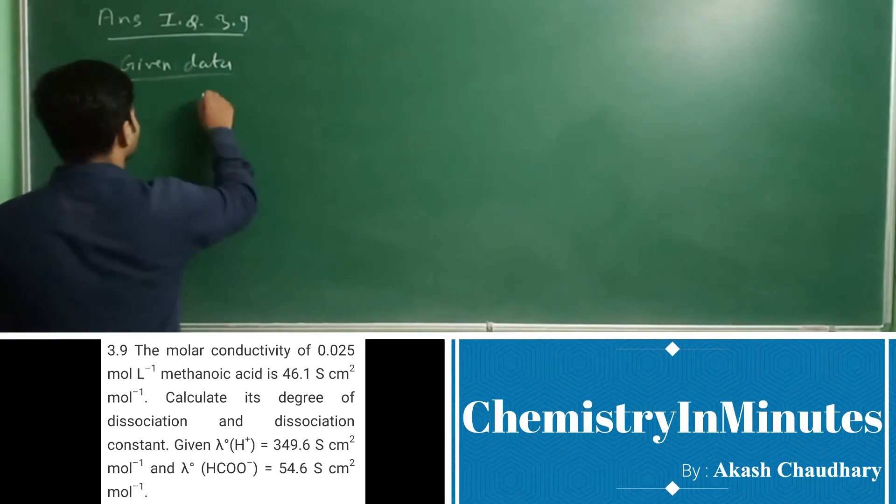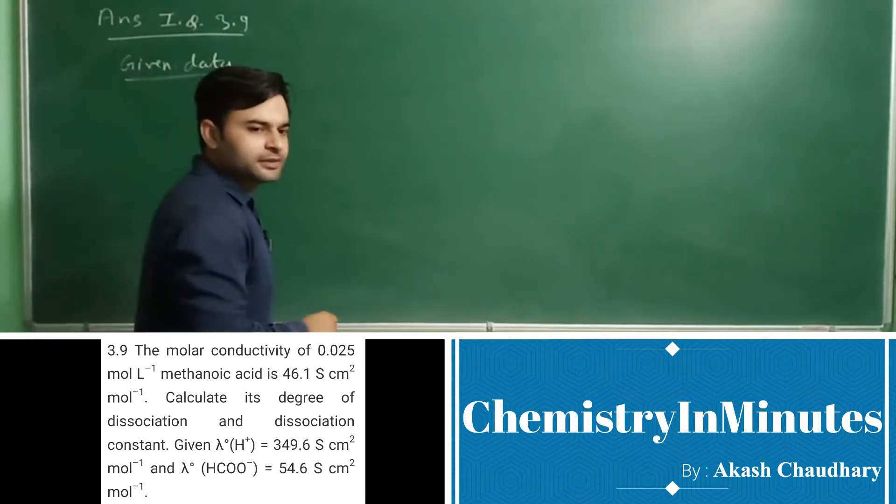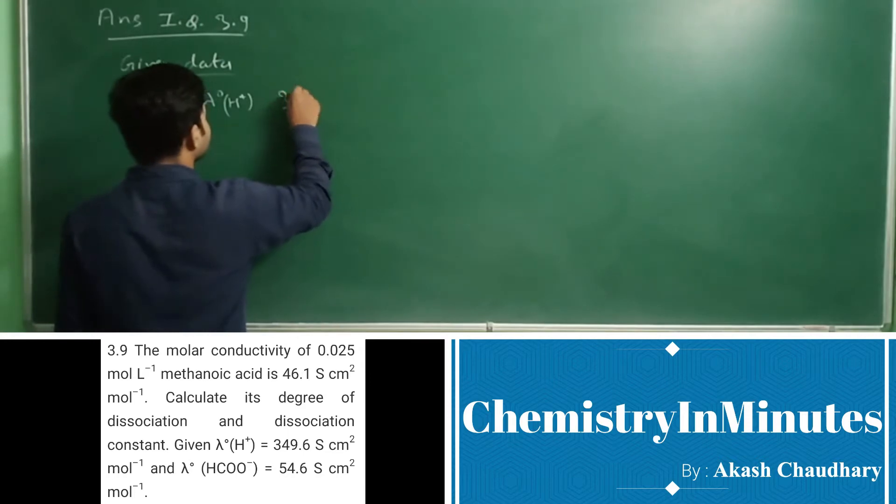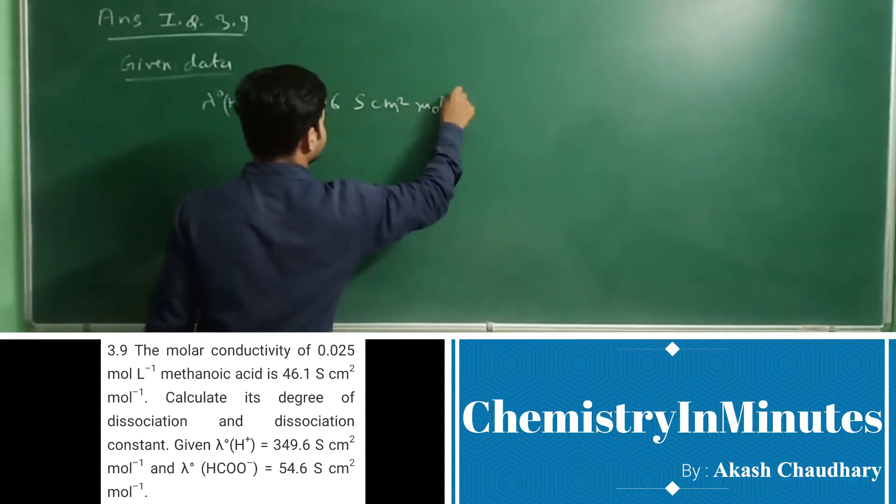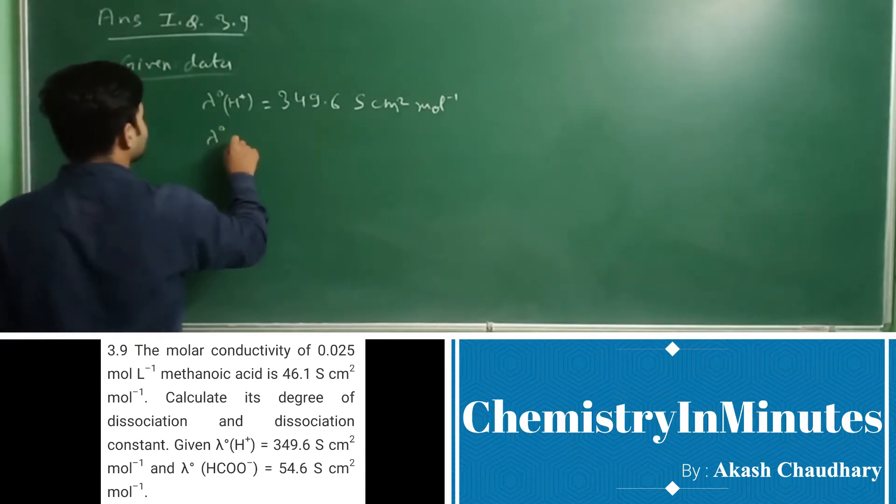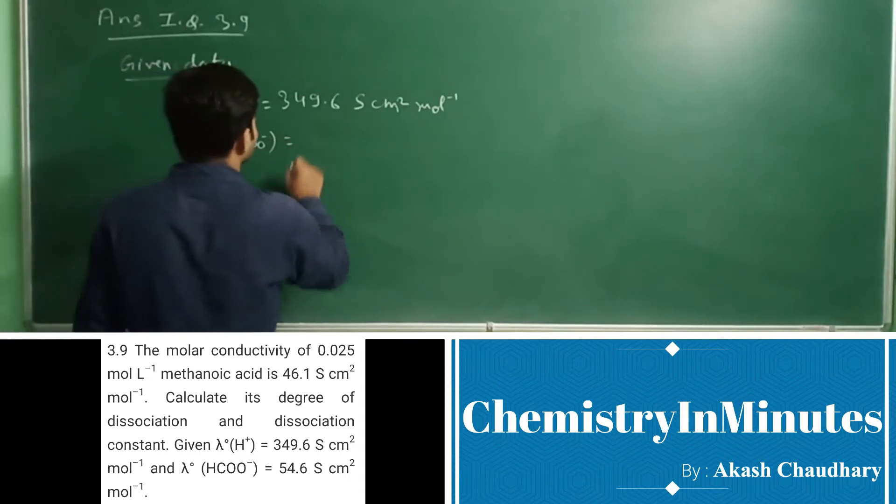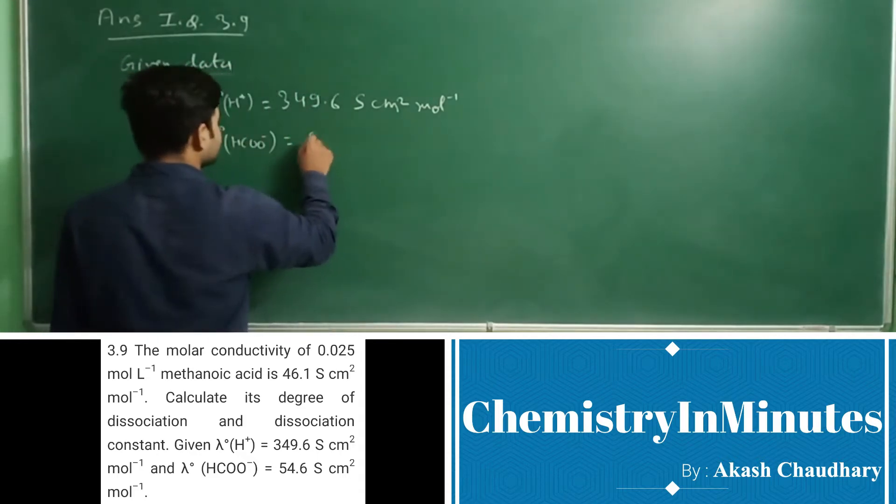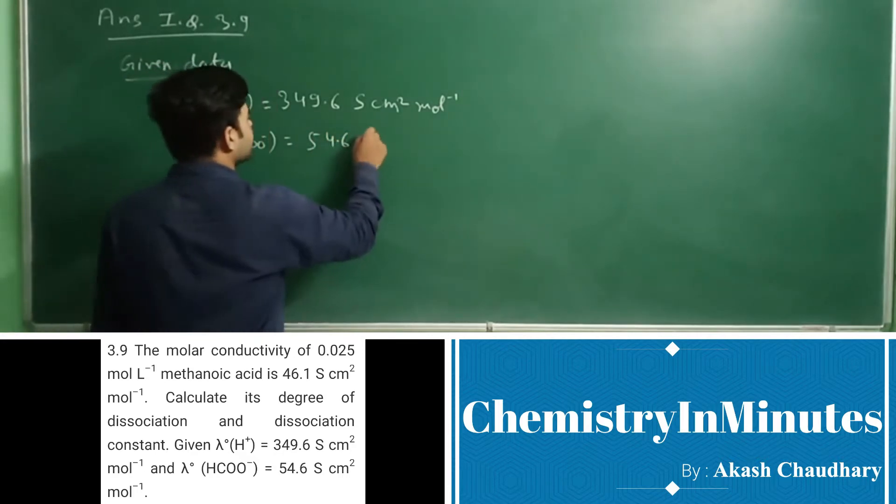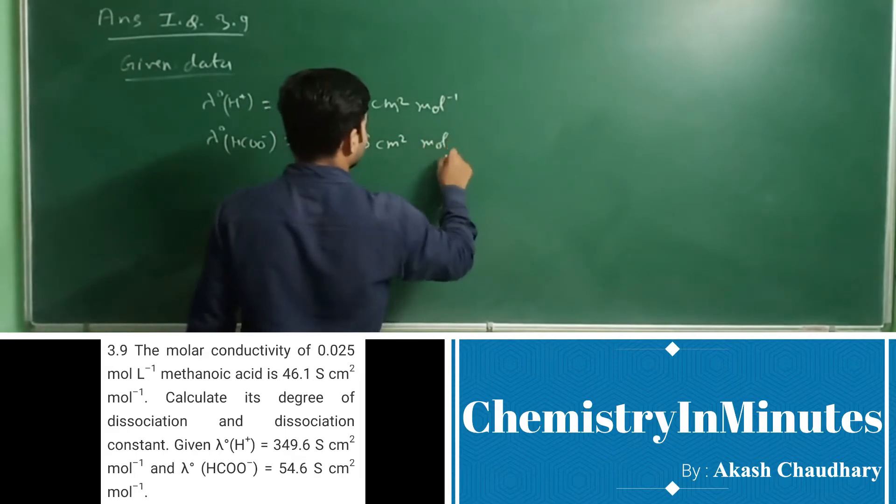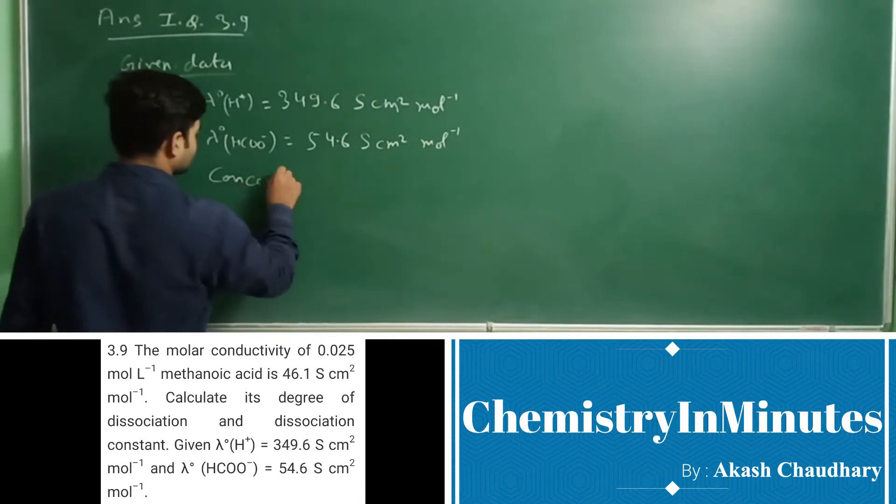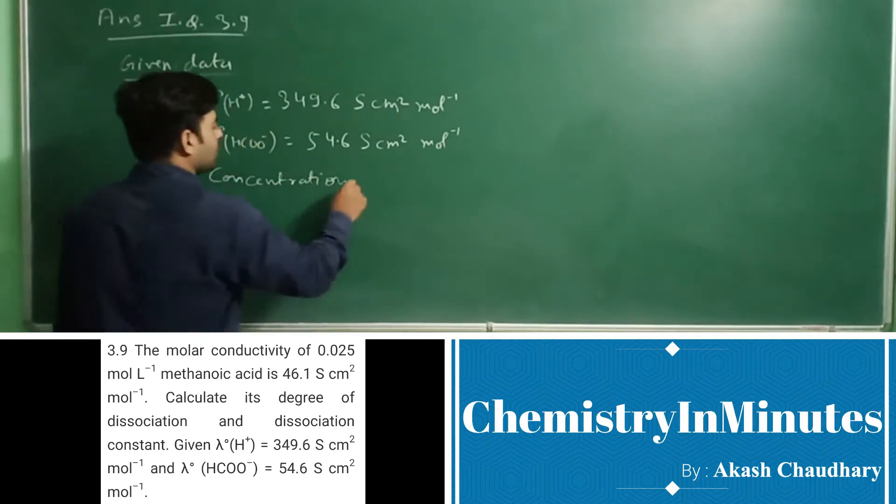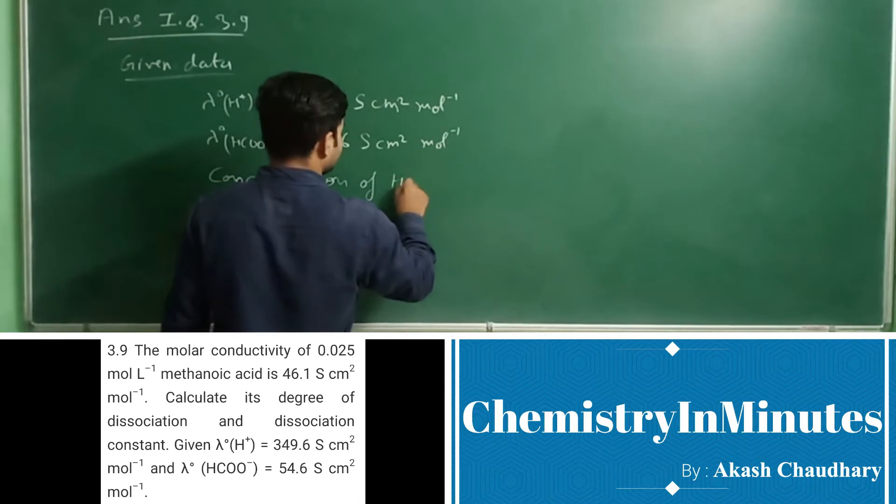Given data is lambda naught H+ equals 349.6 Siemens centimeter square per mole. Then lambda naught HCOO- equals 54.6 Siemens centimeter square per mole.